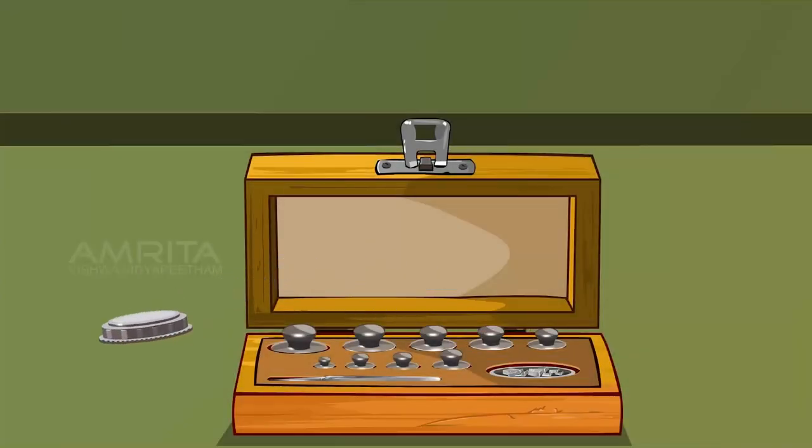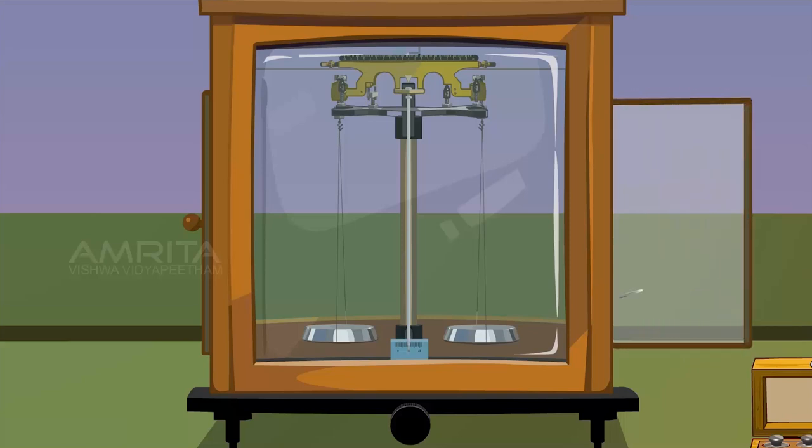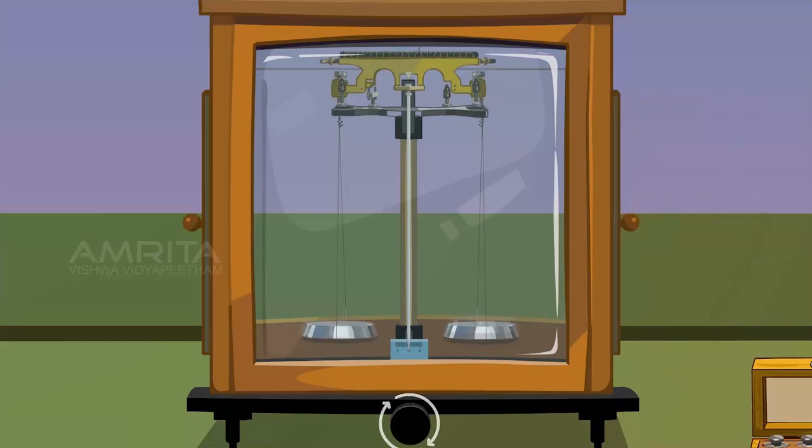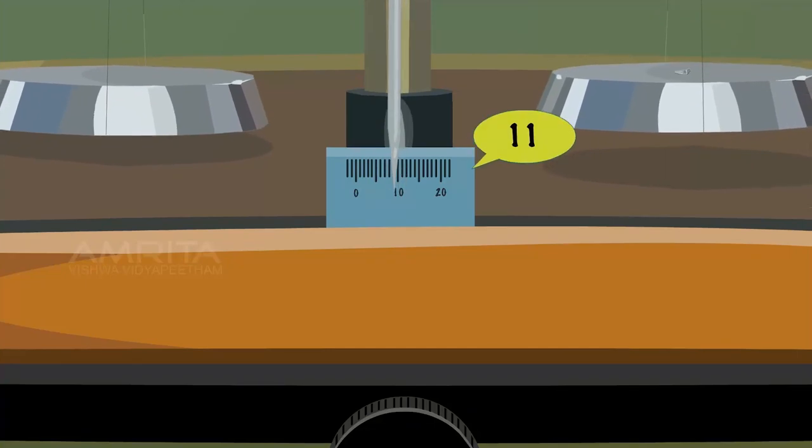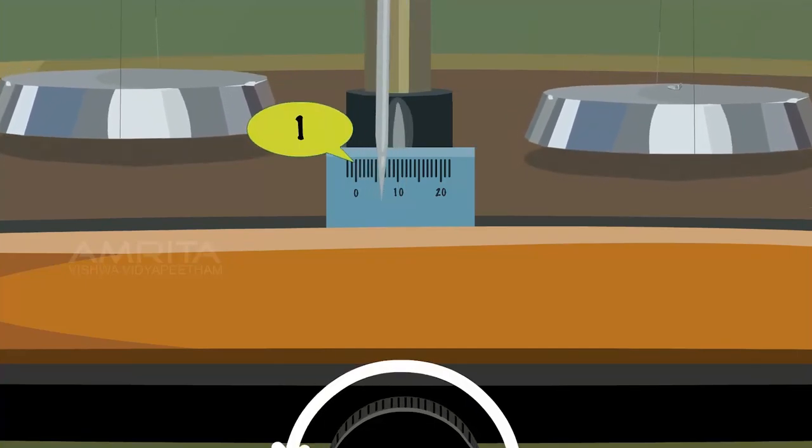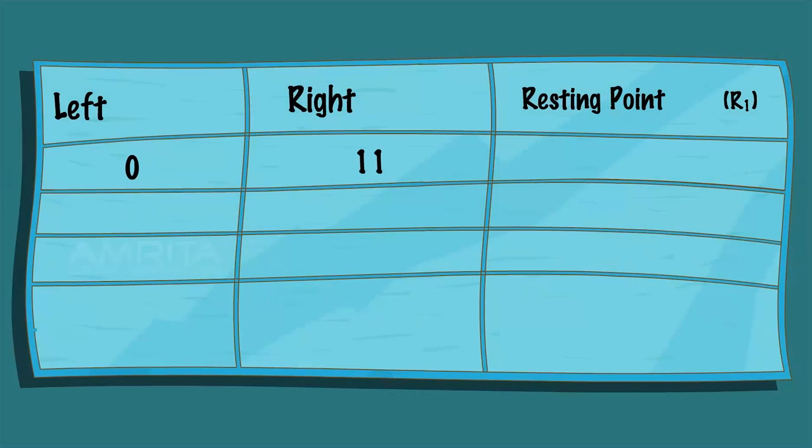Open the weight box and take a weight of 10mg. Open the door and place it in the right pan and close the door. Then the balance is released gently. The resting point R1 is found as before.